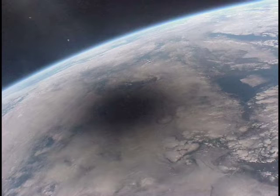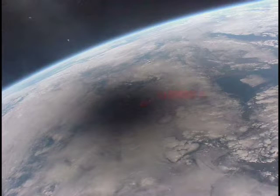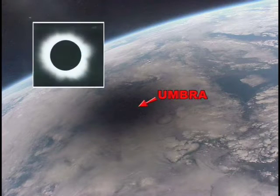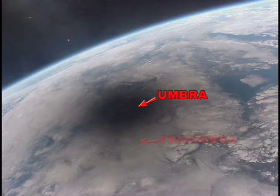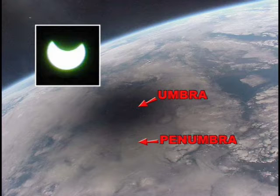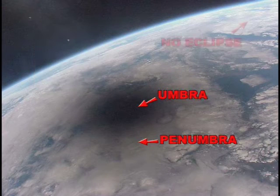Only those people standing directly in the full shadow of the Moon, known as the umbra, see a total eclipse. Someone near the edge of the shadow, called the penumbra, will see a partial eclipse, while someone outside the shadow will see no eclipse at all.